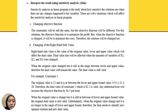For question 2C, we interpret the result using sensitivity analysis. The result consists of changing the objective function and changing the right-hand side, which includes the original value, lower and upper values, and the dual value. The dual value is affected when the values of x1, x2, and x3 change. When the original value changes but remains within the lower and upper range, the dual value will remain the same and is still valid.